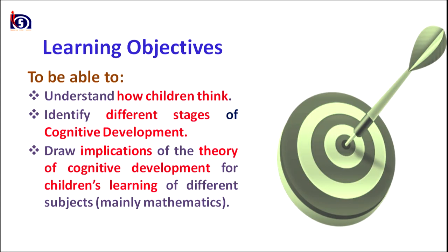Here are the learning objectives or learning outcomes. After going through this lesson, you would be able to understand how children think, identify different stages of cognitive development as proposed by Jean Piaget, and draw implications of the theory of cognitive development for children's learning of different subjects, mainly mathematics.